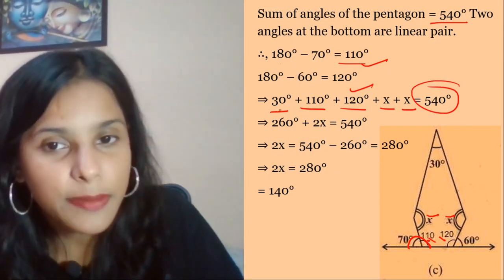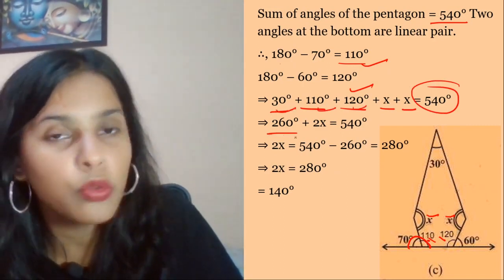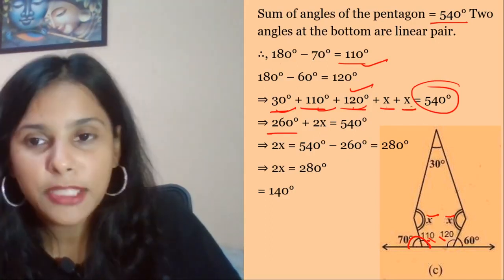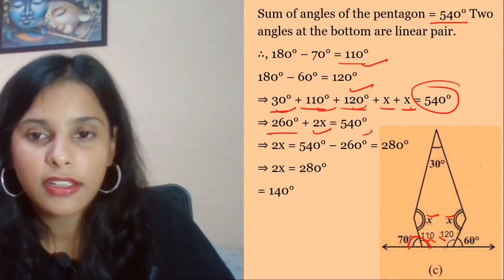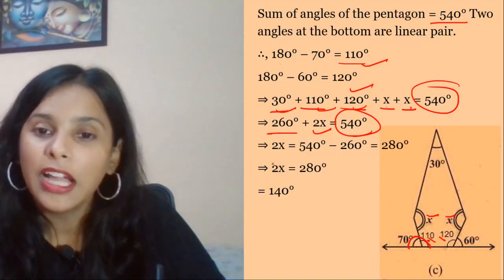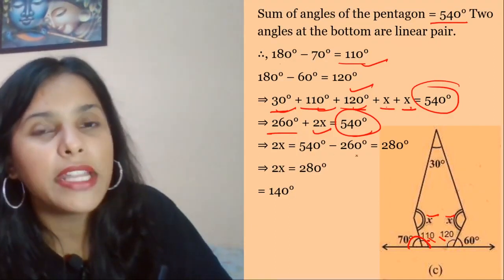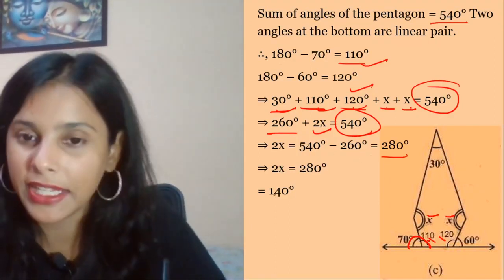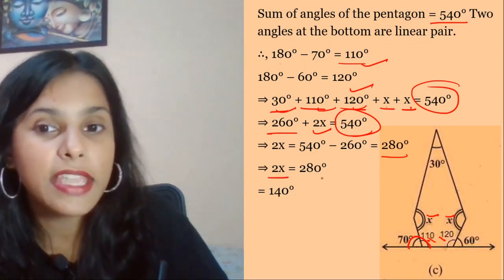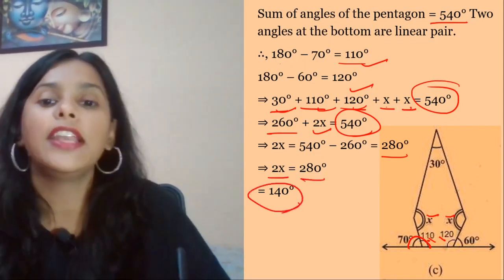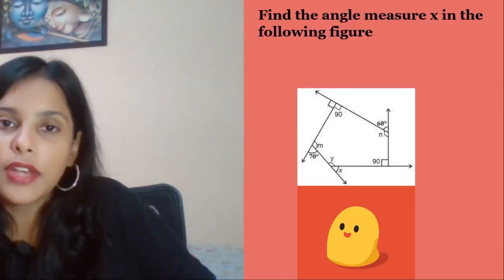So 30 plus 110 plus 120 plus x plus x equals 540. When we sum these three, we get 260, so 2x equals 280. Therefore, x equals 140 degrees. The next question is solved.